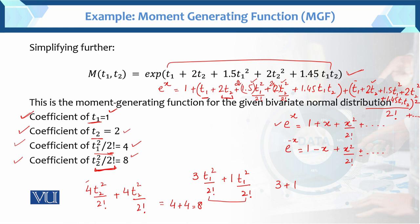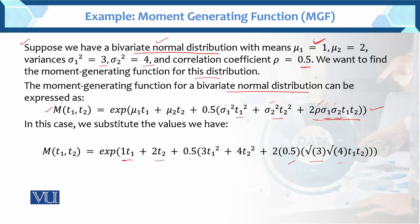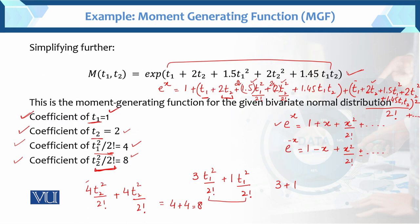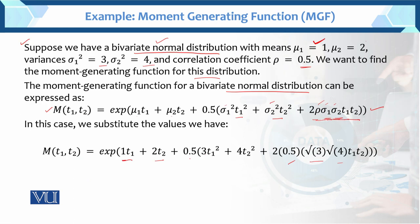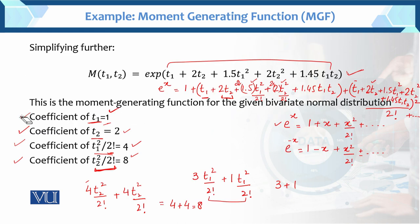Now why are we finding these coefficients — of t1, t2, t1²/2!, t2²/2!? The coefficient of t1 represents μ1. In our particular example, μ1 = 1, and we got coefficient = 1. The coefficient of t2 represents μ2; μ2 = 2, and we got 2. Same result — verified.